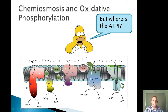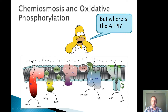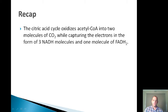Hello everyone, this is my lecture on chemiosmosis and oxidative phosphorylation. In the previous lectures we spoke about the composition of the electron transport chain and we also discussed how the electrons actually move in this pathway through the electron transport chain, ending up being donated to molecular oxygen to form water. One of the outcomes of that electron transport process was this proton gradient that is formed across the membrane. Today we're going to talk about how this potential energy stored in this gradient is used to actually make ATP through a process called chemiosmosis and oxidative phosphorylation.